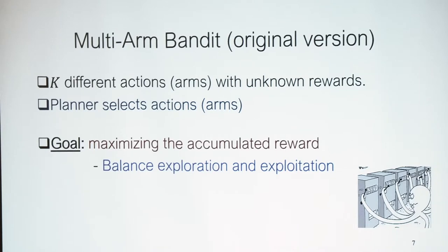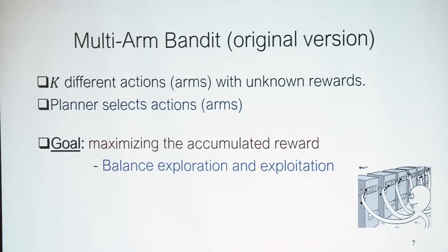How do we model such a problem? We use multi-armed bandit, a well-known subject in machine learning, operational research, and economics. We have k different actions — think of each action as an arm of a slot machine in a casino with unknown rewards. There is one planner that in each time step selects an action, with the goal of maximizing the accumulated reward. This must be done in a way that balances exploration — finding out more about reward distributions — and exploitation, gaining reward using existing information.